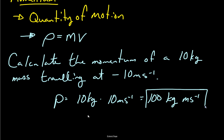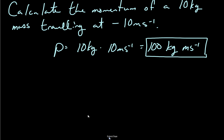Oftentimes people confuse inertia with momentum, but they're different. If a big heavy football player is running towards you, they have the tendency to stay in motion as Newton's first law states, but they also have a large amount of momentum — whatever velocity they're running at multiplied by their mass. Inertia is just one part of that; it's resistance to change in motion. Momentum simply looks at velocity multiplied by mass.